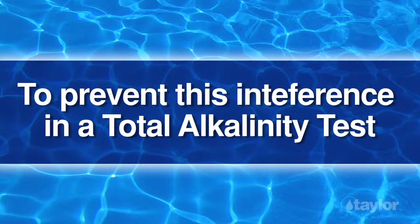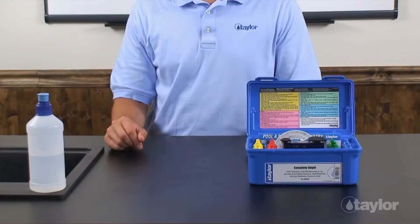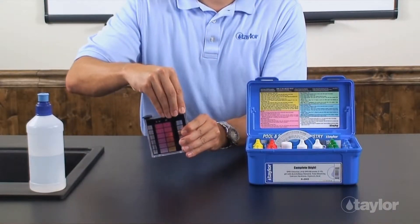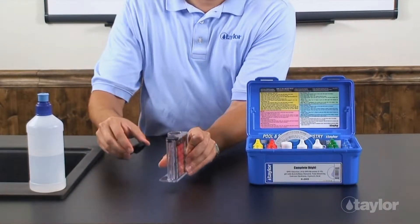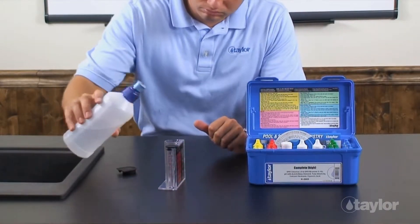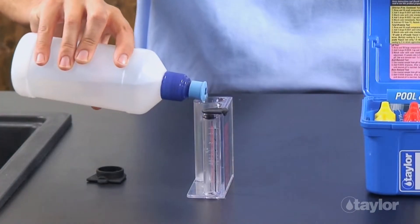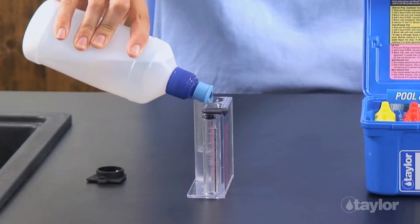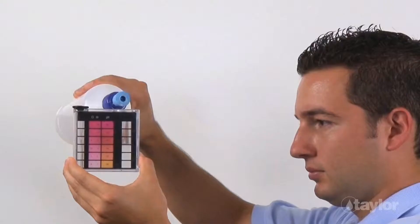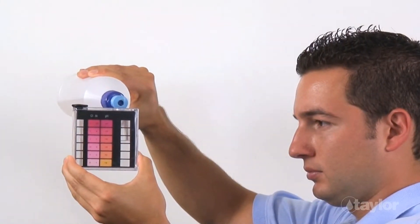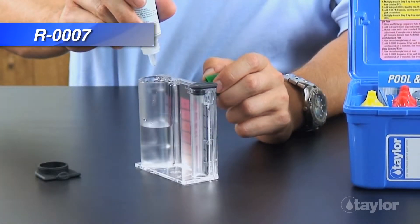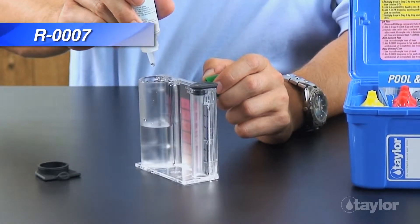To prevent this interference in a total alkalinity test, retest adding one additional drop of reagent 7 in step 2 for a total of 3 drops of thiosulfate. Rinse and fill the large comparator tube to the 25 ml mark with the water to be tested. Add 3 drops of reagent 7 to neutralize the sanitizer residual.